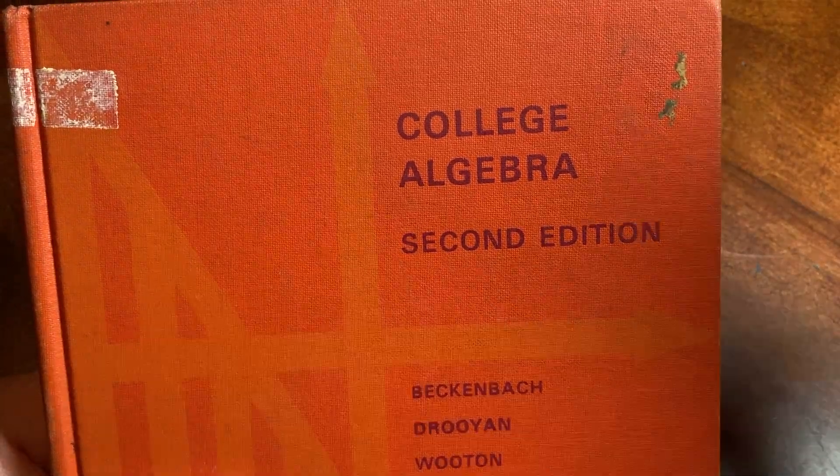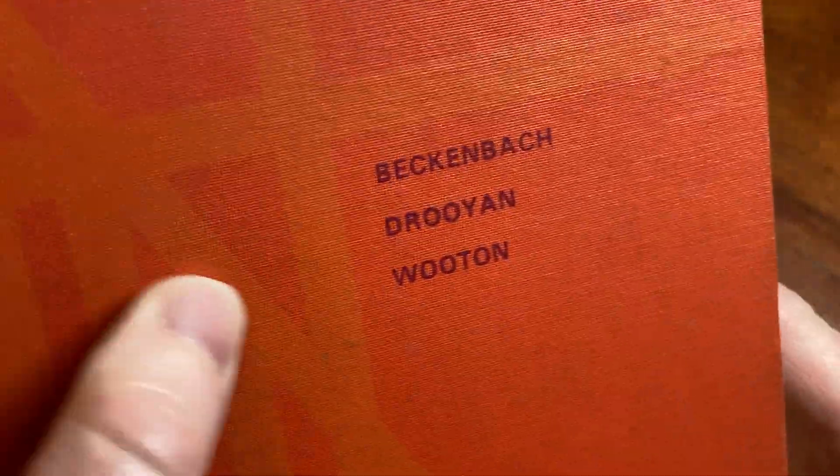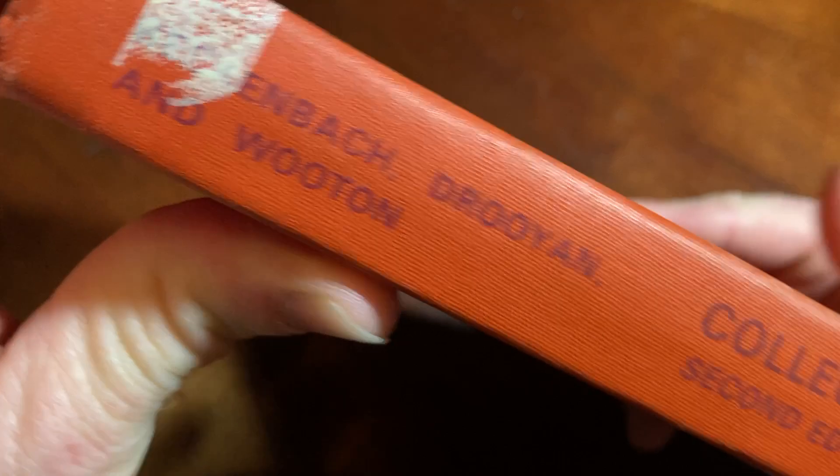Hello, today we're going to talk about college algebra. I'm going to show you a very old college algebra book. It's called College Algebra, Second Edition. It's by Beckenbach, Druyan, and Wootan. And it's a hardcover, Wadsworth. Old school.